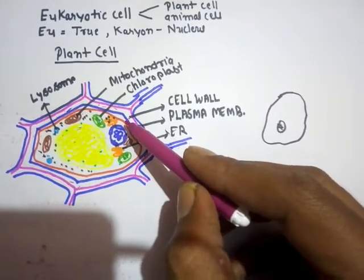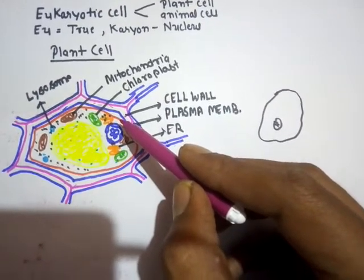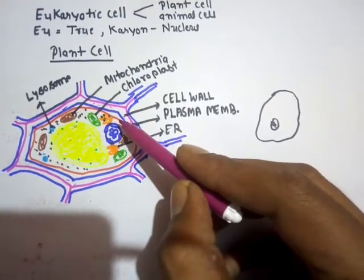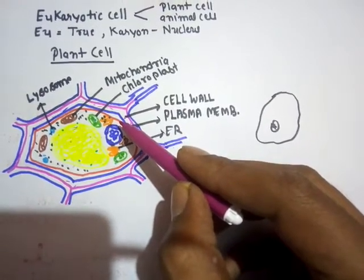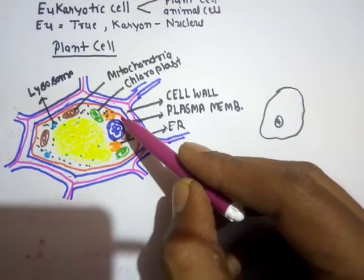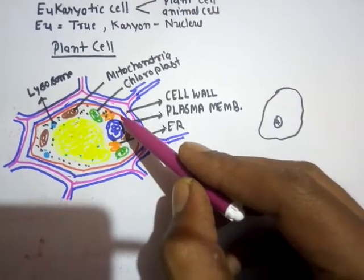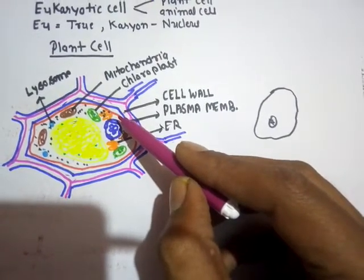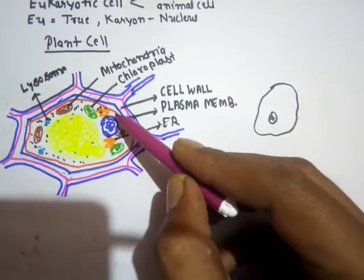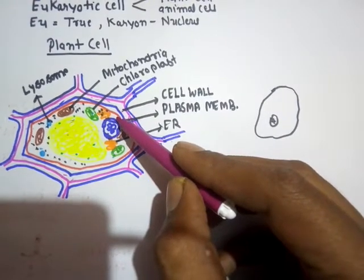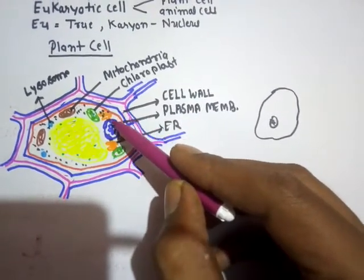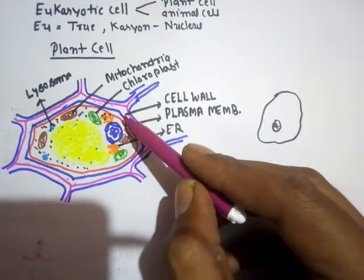This plasma membrane is a selectively permeable membrane, also called a semi-permeable membrane. 'Semi' means half, and permeability means allowing passage. This membrane does not block passage for everything nor allow everything through — it allows the passage of only selected substances across the cell.